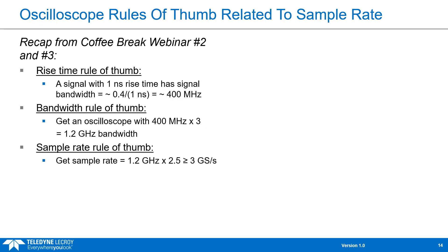Let's look at an example of using the rule of thumbs from this webinar series to select how much sample rate we need. If you haven't seen webinars two and three, I'd recommend watching those first. So if we have a signal with a one nanosecond rise time, using the rise time rule of thumb gives a signal bandwidth of approximately 400 MHz. To get an oscilloscope with sufficiently higher bandwidth than the signal, the bandwidth rule of thumb states you need three times the signal bandwidth — so in this case, a 1.2 GHz oscilloscope.